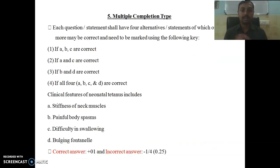Then comes the multiple completion type. Here you can see the clinical features and the options have been given. There will be multiple things. Either one option is correct or two options are correct or three options are correct. You have to select the proper alternative. If you go right you will get one mark here. If you go wrong you will lose minus 0.25 marks.